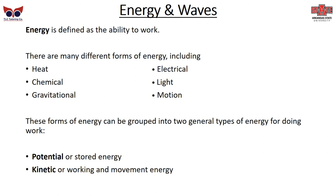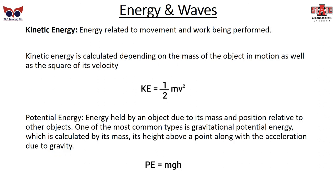Kinetic energy is the energy related to movement and work being performed. It depends on the mass of the object in motion and the square of its velocity: KE = ½mv². So if you throw a baseball, its mass times its velocity squared, divided by two, tells you how much kinetic energy it has right before it hits the catcher's glove.